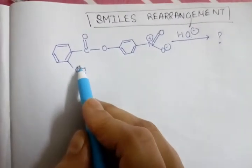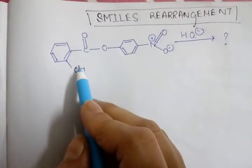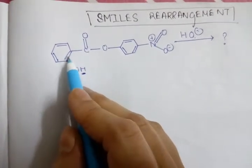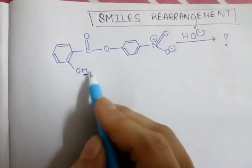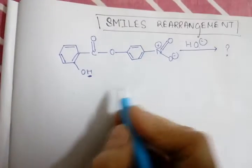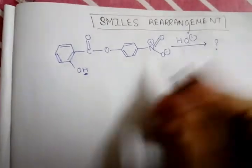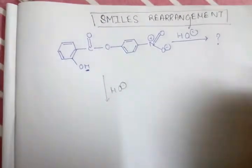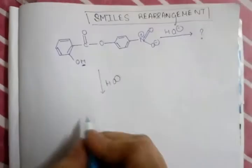If this hydrogen is captured by this HO minus, then a negative charge comes upon oxygen and this negative charge can easily go to resonance stabilization. Hence, this is an acidic hydrogen. So at first, HO minus captures this acidic hydrogen and the O negative will form here.